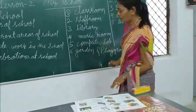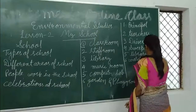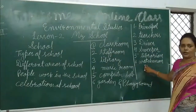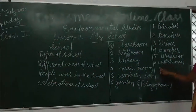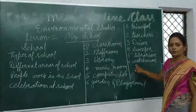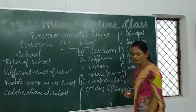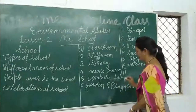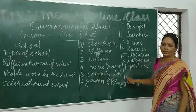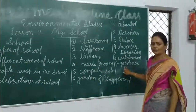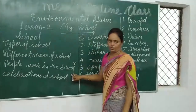Number six is the watchman. Children, you have all seen the watchman on the school gate. There is always a watchman on the school gate. It is the duty of the watchman to see all the visitors and guard the school. Number seven is the gardener. The gardener looks after the school garden. That completes the people who work in the school.